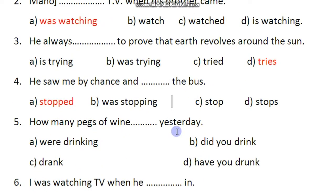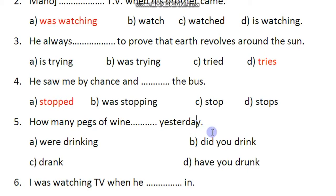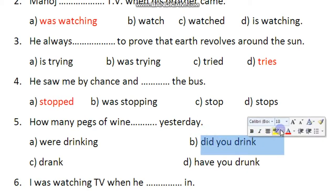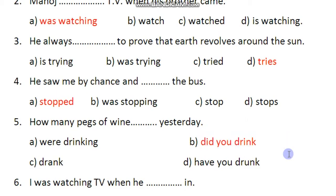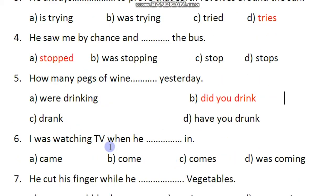Next: How many packs of wine dash you drink yesterday? The options are: were drinking, did you drink, you drank, or have you drunk. Since 'yesterday' is our adverb of time, we use past indefinite tense. For an interrogative sentence in past indefinite, 'did you drink' is the right option.